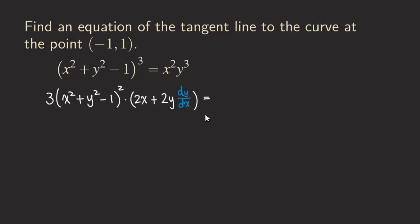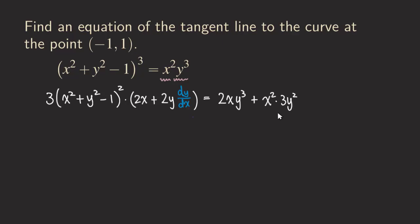Now for the right-hand side: there are two functions here, and since it's a product of two functions, we use the product rule. We differentiate x² first and copy y³, getting 2x·y³. Then we add the next term: copy x² and differentiate y³ to get 3y². Because we are differentiating y with respect to x, we multiply by dy/dx, giving x²·3y²·(dy/dx).